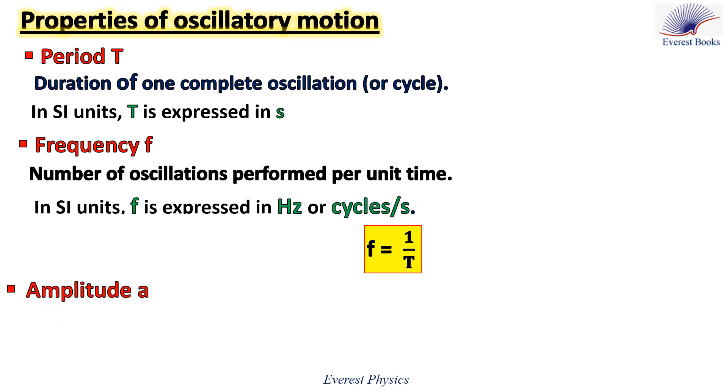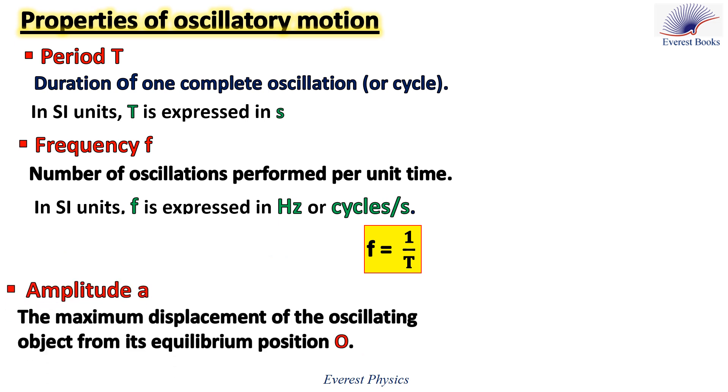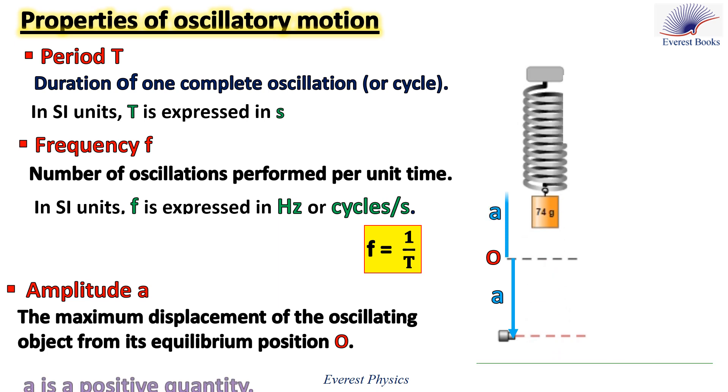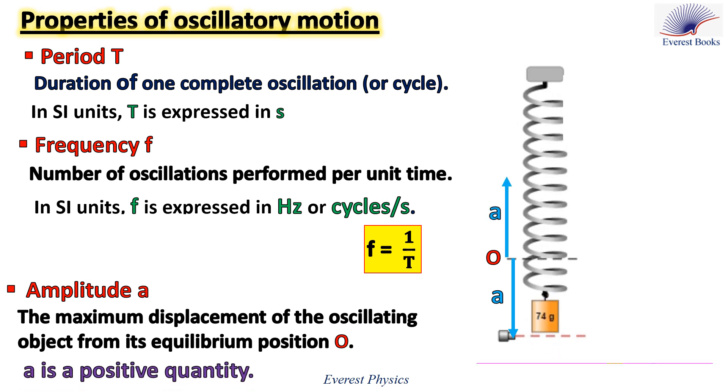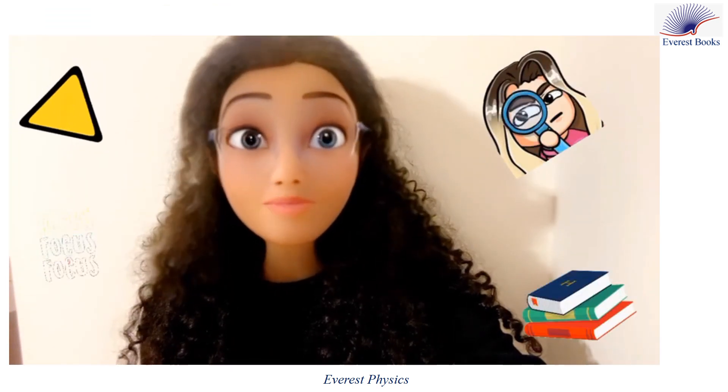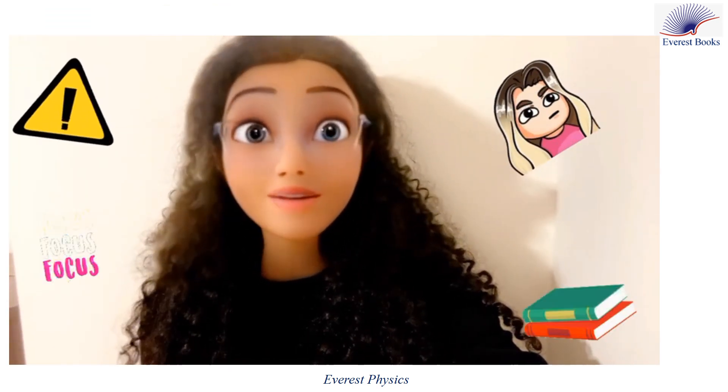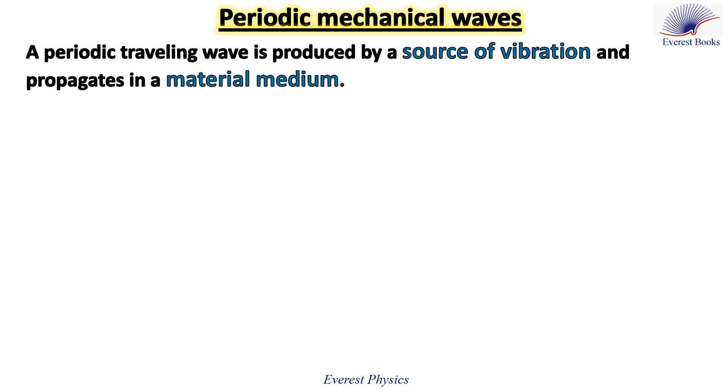The third property is the amplitude which is the maximum displacement of the oscillating object from its equilibrium position O. The amplitude is a positive quantity. So it is the distance separating the equilibrium position and the highest extreme position or the lowest extreme position. Focus please. This is important.